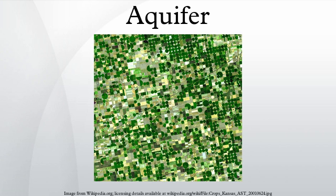The Ogallala Aquifer of the central United States is one of the world's great aquifers, but in places it is being rapidly depleted by growing municipal use and continuing agricultural use. This huge aquifer, which underlies portions of eight states, contains primarily fossil water from the time of the last glaciation. Annual recharge in the more arid parts of the aquifer is estimated to total only about 10% of annual withdrawals. According to a 2013 report by research hydrologist Leonard F. Konikow at the United States Geological Survey, the depletion between 2001 and 2008 is about 32% of the cumulative depletion during the entire 20th century.